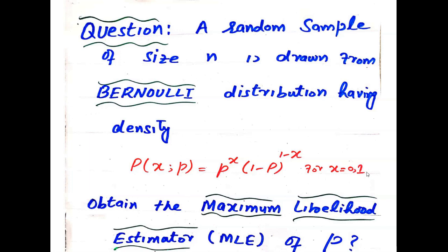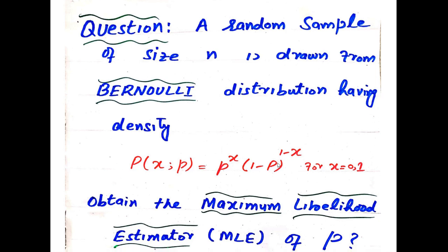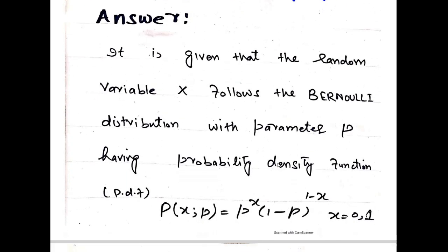In this video, I solve a numerical question about Maximum Likelihood Estimator, MLE. MLE is the abbreviation of Maximum Likelihood Estimator of P. P is the parameter of Bernoulli distribution, and a random sample of size n is drawn from Bernoulli distribution. We calculate the MLE for the Bernoulli distribution.